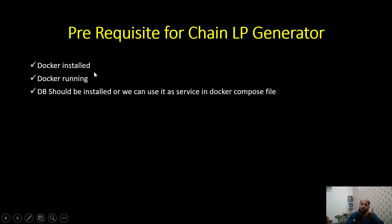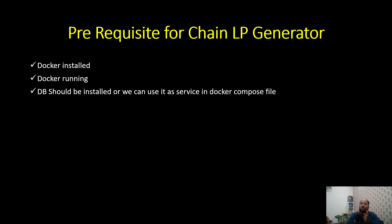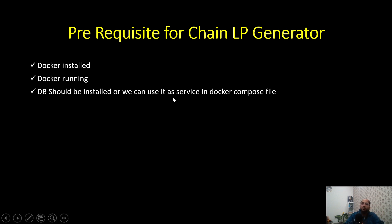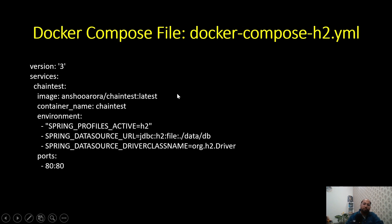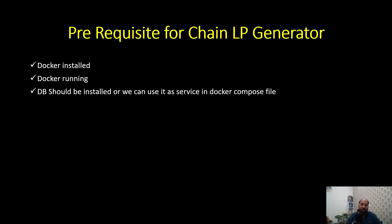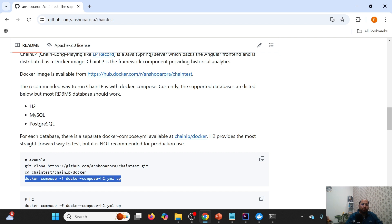The prerequisites for generating ChainLP data are: first, Docker must be installed and running to create the container. Second, if using any database other than H2 — which would be the real-world case — the database must be installed on the machine where the ChainLP server is created. For example, if using MySQL, it should be installed on that machine. You could also use a database as a service by defining it as a Docker service, but this is not recommended because if that container is killed you will lose the history.